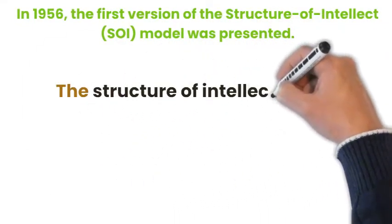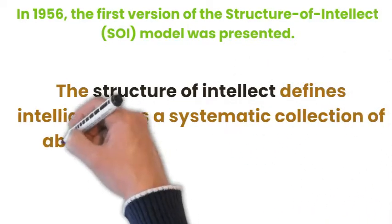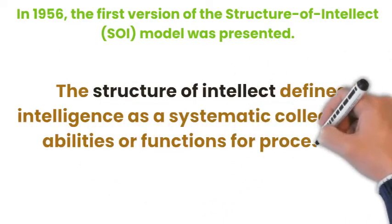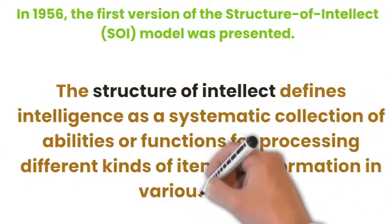The Structure of Intellect defines intelligence as a systematic collection of abilities, or functions, for processing different kinds of items of information in various ways.